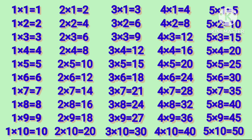3 ones are 3, 3 twos are 6, 3 threes are 9, 3 fours are 12, 3 fives are 15, 3 sixes are 18, 3 sevens are 21, 3 eights are 24, 3 nines are 27, 3 tens are 30.